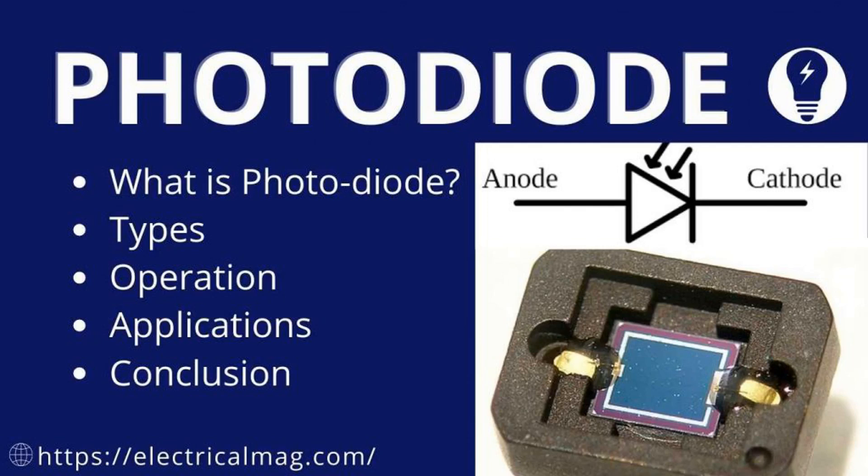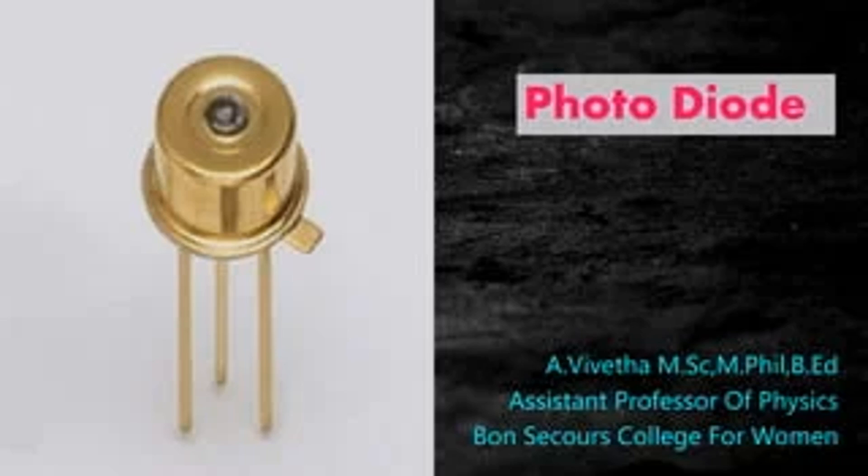What is a photodiode and how does it work? A photodiode is a semiconductor device that converts light into an electrical current. The current is generated when photons are absorbed in the photodiode's depletion region, which generates electron-hole pairs. Here's an overview of its operation and applications.